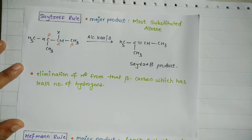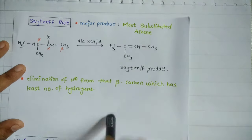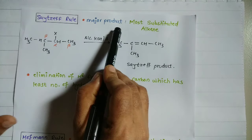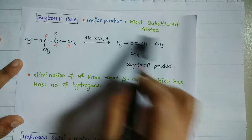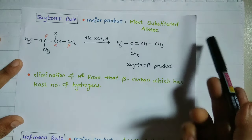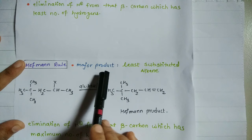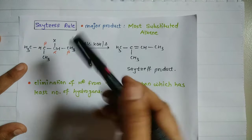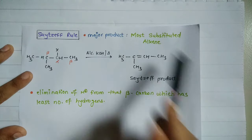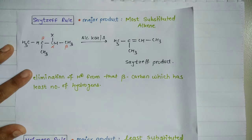So what is the SIDZP rule and what is the Hoffman rule? Without wasting time, we are going to start with the concept. With the SIDZP rule, you will get the less substituted alkene.